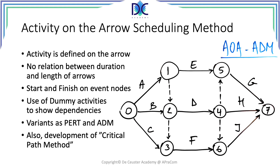We also have the activity-on-arrow scheduling method. In this diagram, events are numbered 0 through 7. An arrow indicates the work being done: for example, the arrow between event 0 and event 1 represents activity A, where 0 is the start event and 1 is the end event. The length of the arrow is not related to the duration of the activity. Dotted lines represent dummy activities, which are necessary to correctly build the network.